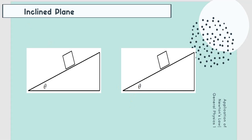Let's have the free body diagram of an inclined plane. I have two here so you can see that you can actually rotate this. So here is the inclined plane. If we have an object with mass equal to m, it will have its weight directed downward. Remember that the normal force will always be perpendicular to the surface. So we label this Fn, and this one is the weight. As you can see, they're not equal.